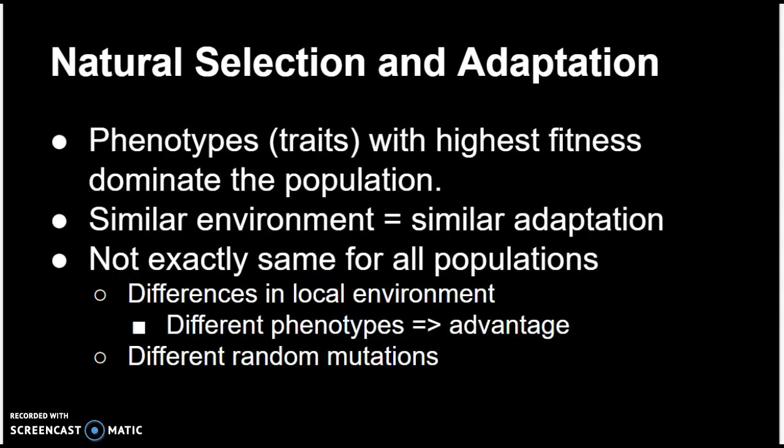The result of natural selection is adaptation — the entire population comes to have phenotypes or traits of the highest fitness that dominate. If we look at organisms in similar environments, we often see similar adaptations, but not always. Differences in local environment may create different types of advantage. In the case of rock pocket mice, populations in regular desert areas had no advantage to being dark, but populations in lava flow areas did. You could also have different random mutations that occur in different populations, so sometimes populations become different because genetically there are changes that only occur in one population and not another.